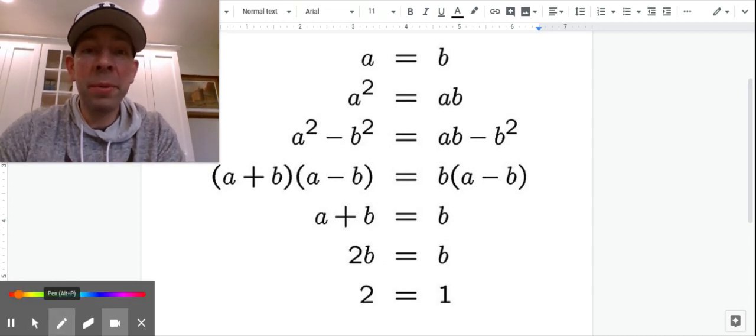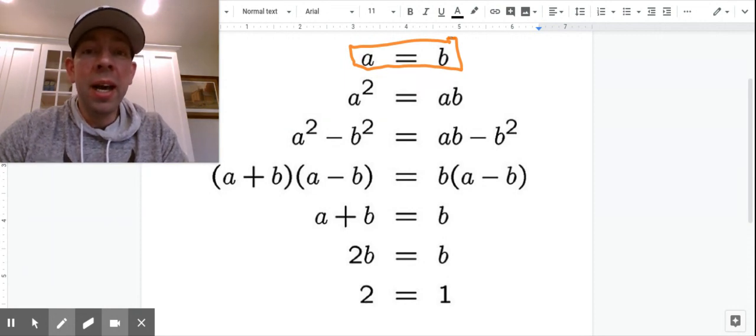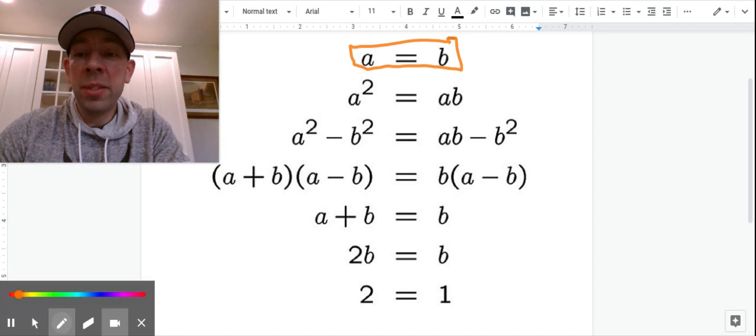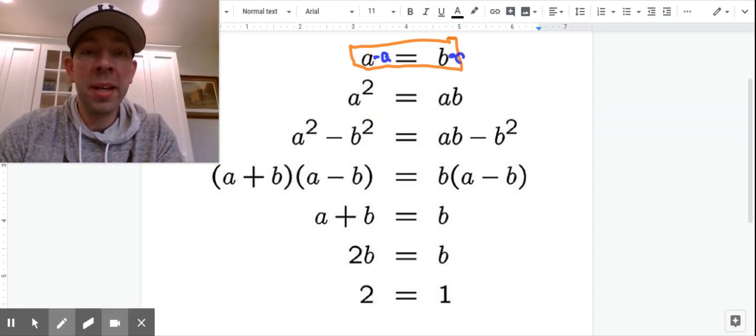So first, right off the bat, we start with this initial premise that A is equal to B. And that's what most proofs start off with, some premise or assumption. And so what they did first is they just multiplied both sides of the equation by A. So if we multiply this side by A, we multiply this side by A.